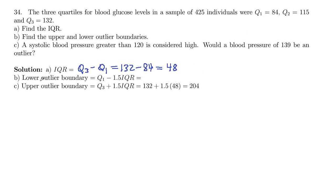And then to get your lower outlier boundary, you take Q1 and subtract 1.5 times the IQR. So our Q1 is 84, and we subtract 1.5 times that 48.